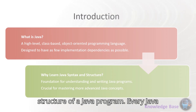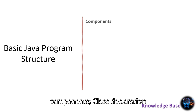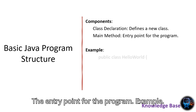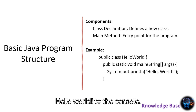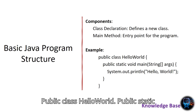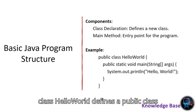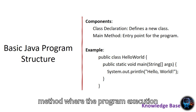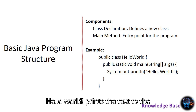Let's start with the basic structure of a Java program. Every Java program consists of the following components: Class declaration, which defines a new class, and the Main method, which is the entry point for the program. Here's a simple Java program that prints Hello World to the console: public class HelloWorld { public static void main(String[] args) { System.out.println("Hello World"); } }. In this example, public class HelloWorld defines a public class named HelloWorld. public static void main(String[] args) is the main method where program execution begins. System.out.println("Hello World") prints the text to the console.